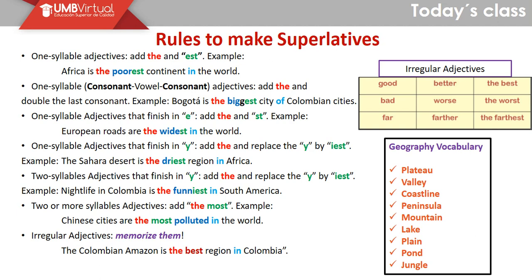Antes del superlativo es obligatorio utilizar el artículo 'the'. Según el número de sílabas que tenga el adjetivo y en qué termina, pueden seguir las indicaciones de estas reglas. A continuación vamos a ver un vocabulario relacionado con geografía. Plateau es una meseta, valley es un valle, coastline es el borde costero, peninsula igual que en español, mountain es una montaña, lake es un lago, plain es una planicie, pond es un estanque, y jungle es una jungla o selva.